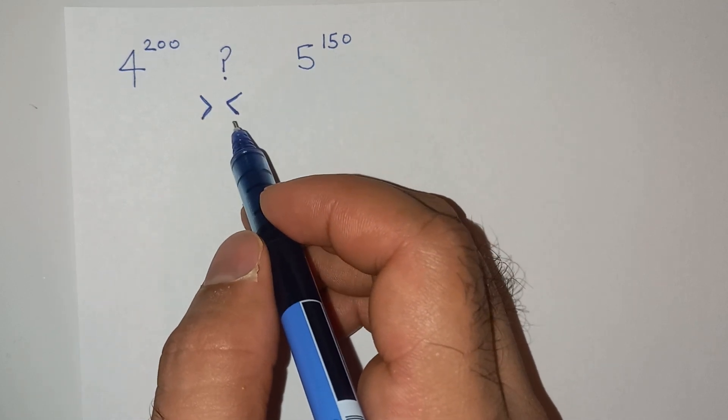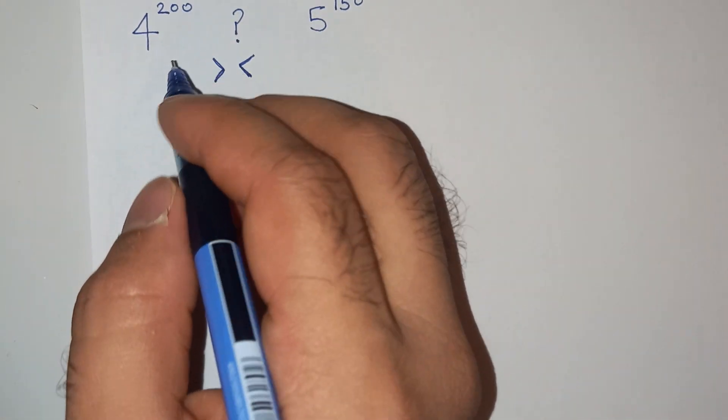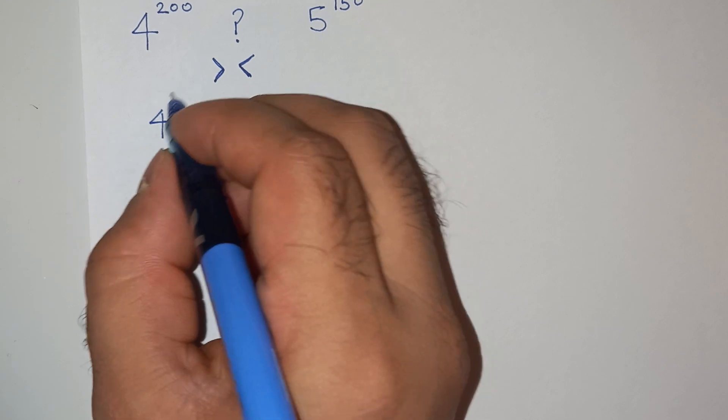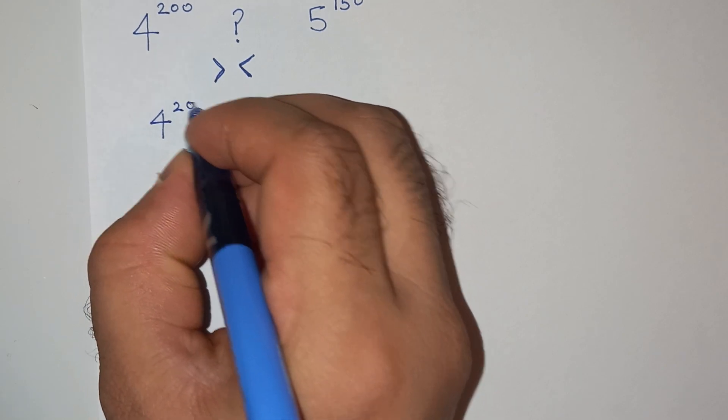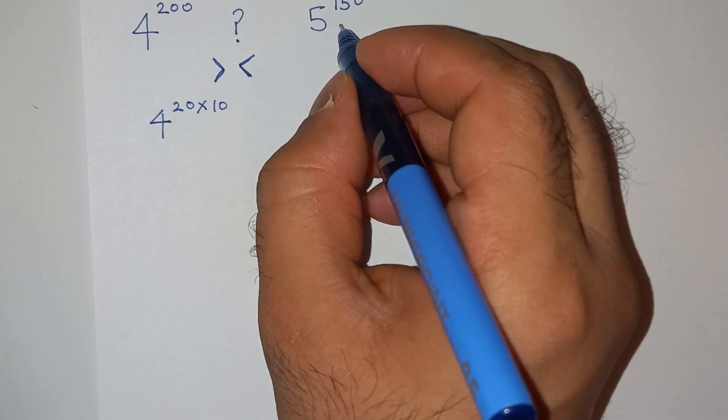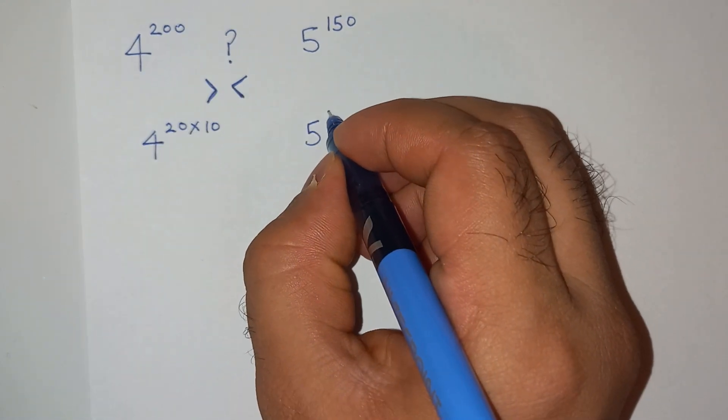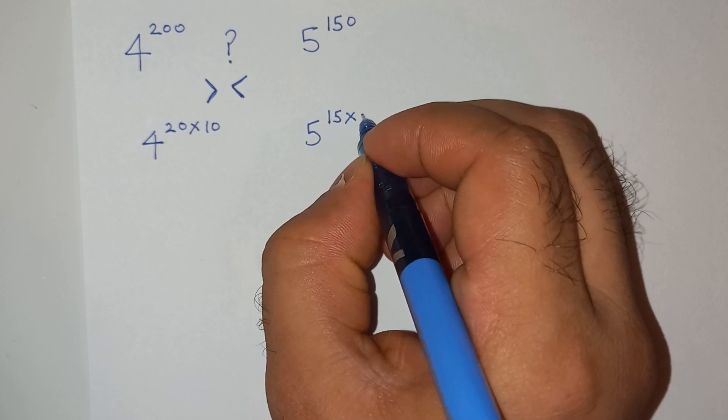How to solve this question? So this 4 power 200 can be written as 4 power 20 multiplied 10, and 5 power 150 can be written as 5 power 15 multiplied 10.